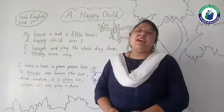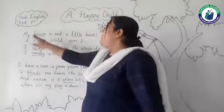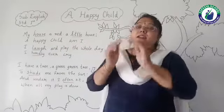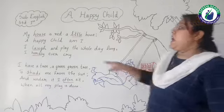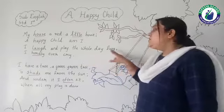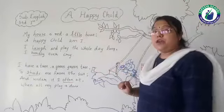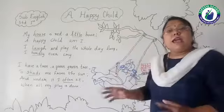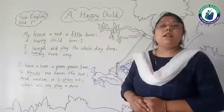You are enjoying this poem? Let us learn about this poem. My house is red, a little house — the child is having a little red color house. Here you can see I have drawn a red color house. Our child is very happy because she laughs and plays for the whole day. She is enjoying the day and she never cries — rarely only she cries.